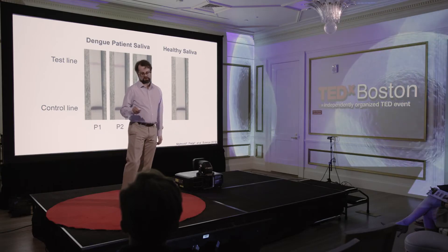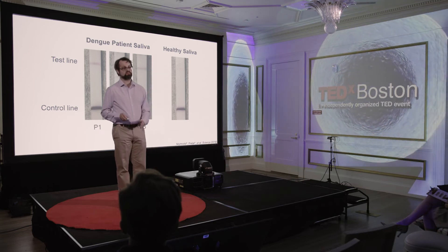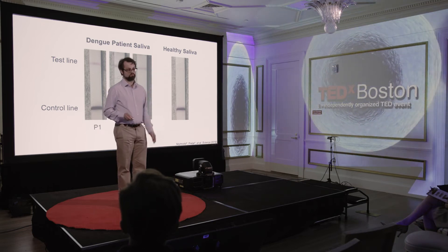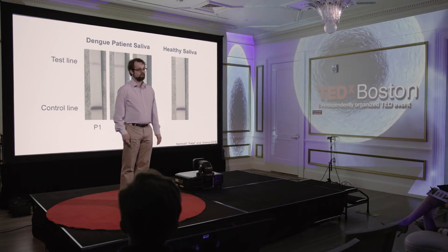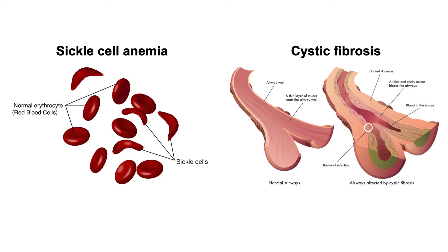We didn't just stop at viruses, because there are lots of other things you might want to detect using the power of CRISPR. One of those is SNPs, or single nucleotide polymorphisms — small genetic changes that we all have, slight variations in sequence where only a single letter varies. Some SNPs are associated with human disease, things like sickle cell anemia and cystic fibrosis.